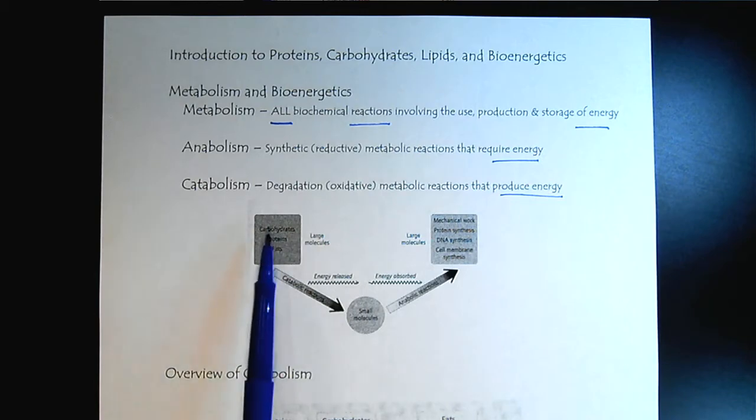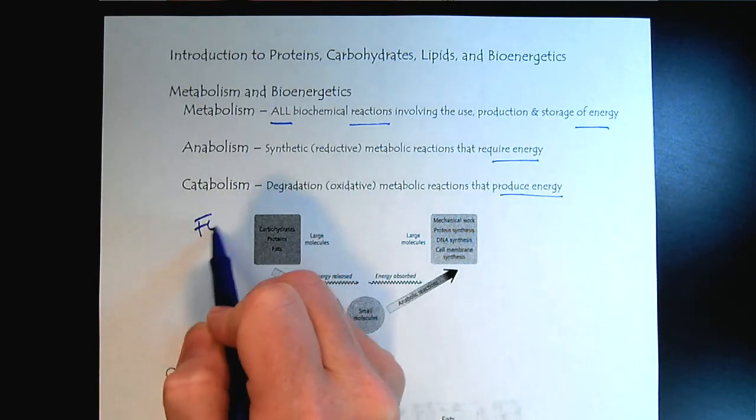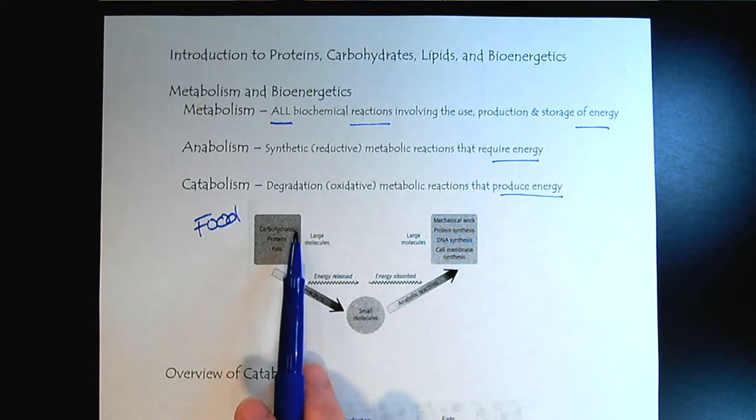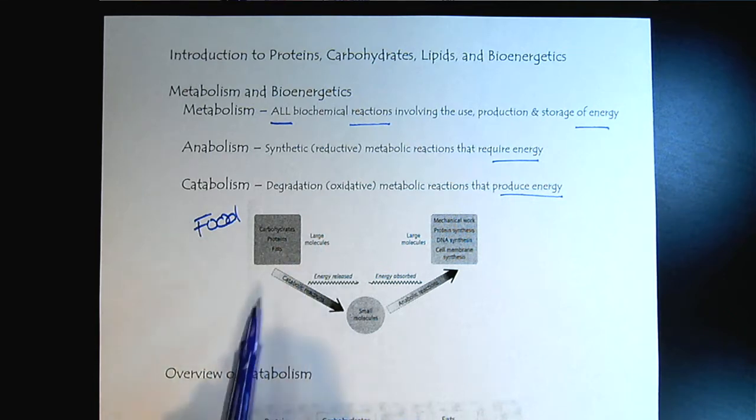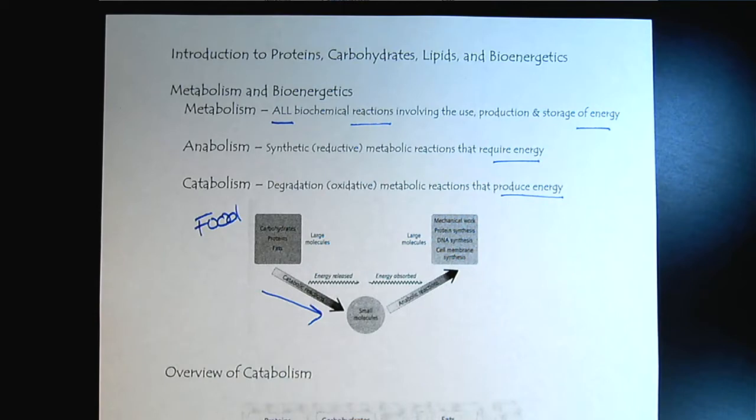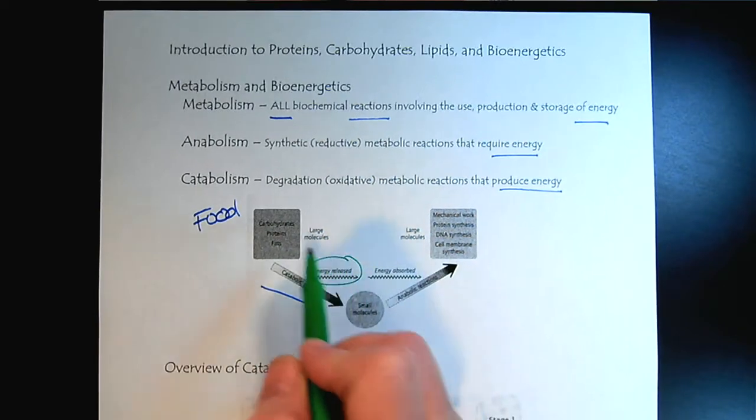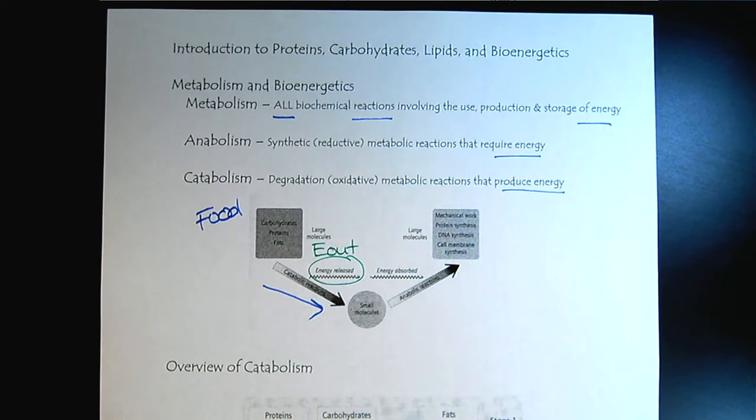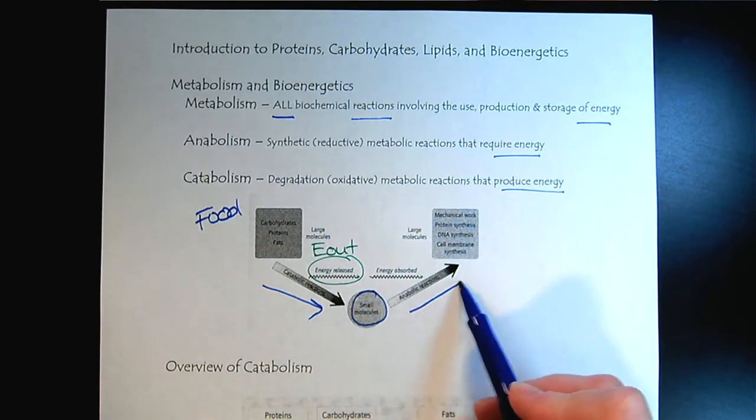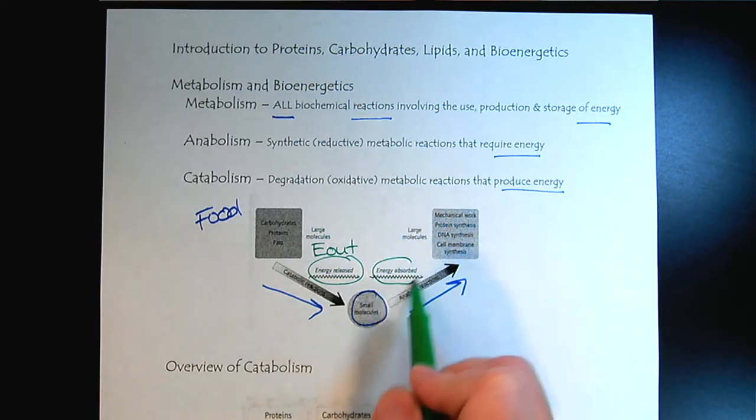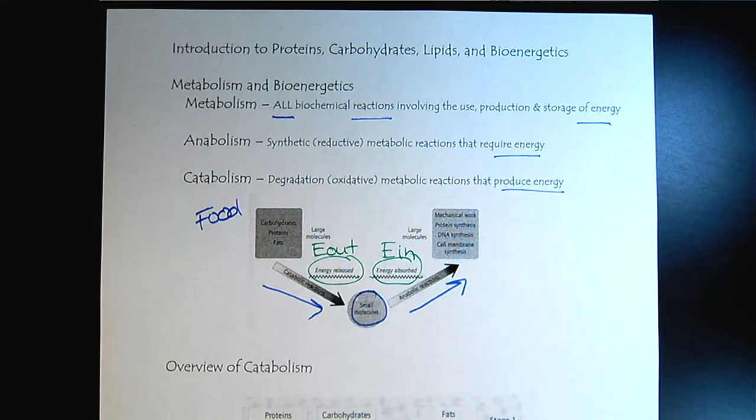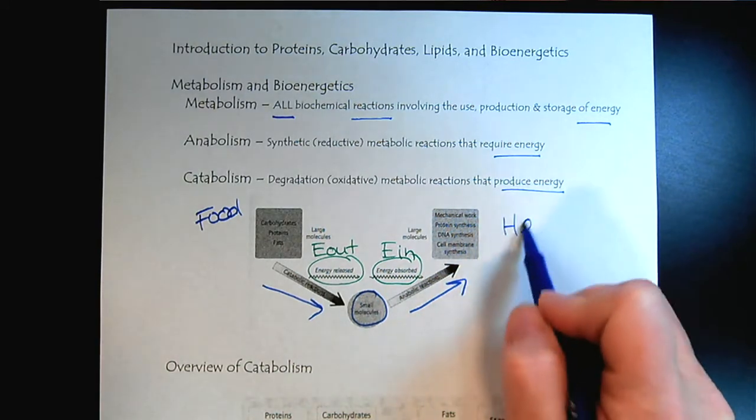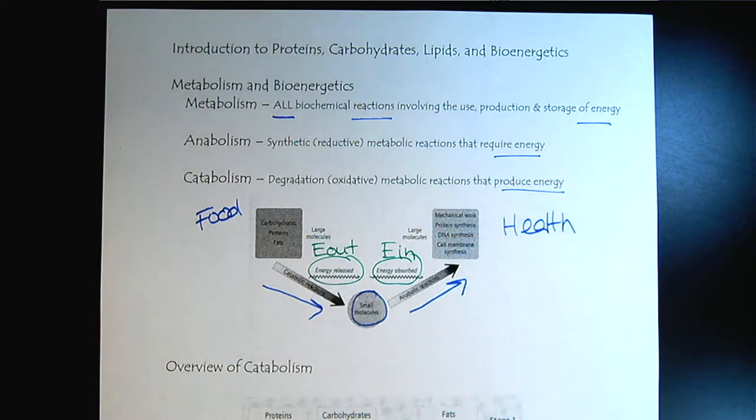If we look at metabolism overall, here's our food. The clarity's not the best, but our food is carbohydrates, proteins, and fats. Those are all large molecules. Through catabolism, we break them down. The good part is we get energy out that we can use to fuel our being alive. That leads us to the small molecules. Then through anabolic processes, we need to bring energy in, and then we can produce the large molecules that we need for our health.